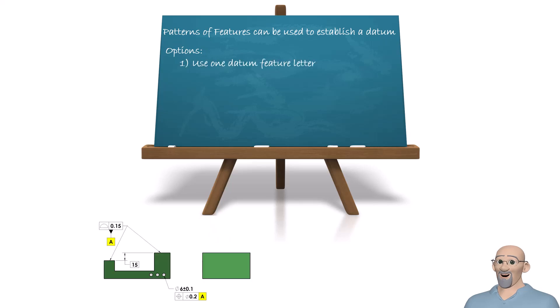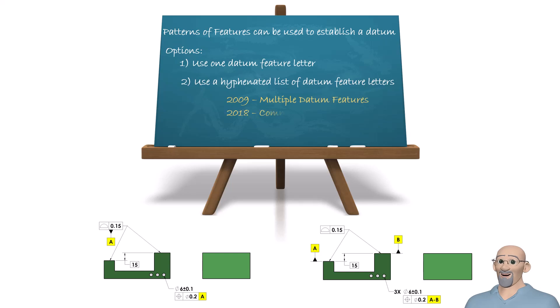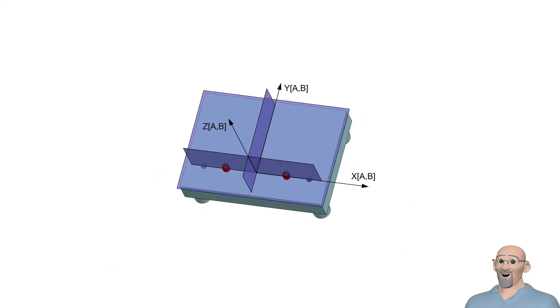The Y14.5 standard tells us we can use a pattern of features to establish a datum. The pattern of features may be specified using one datum feature letter or a hyphenated list of datum feature letters, termed a multiple datum feature in 2009 or a common datum feature in 2018. One datum feature simulator is created for the pattern datum feature and one datum is found on or within that datum feature simulator.